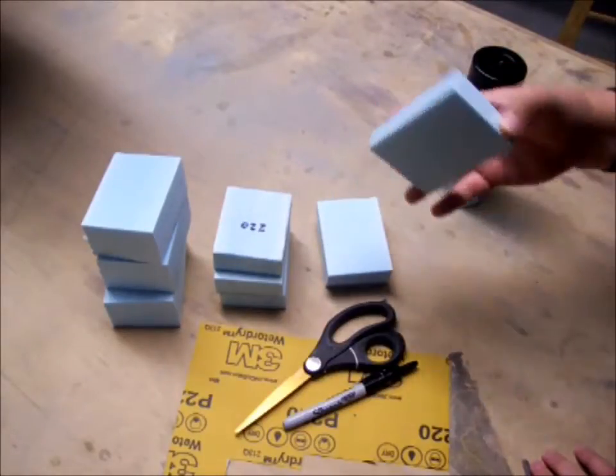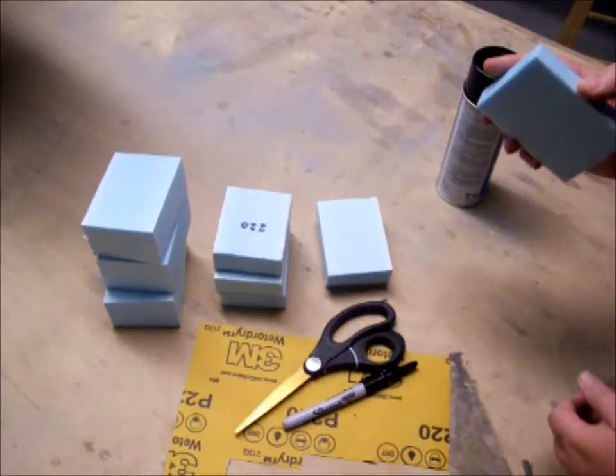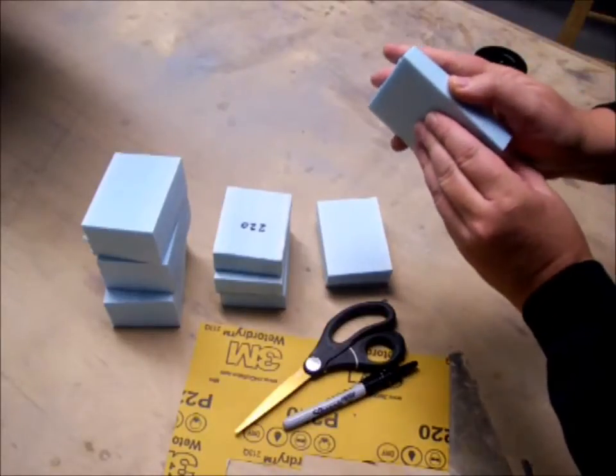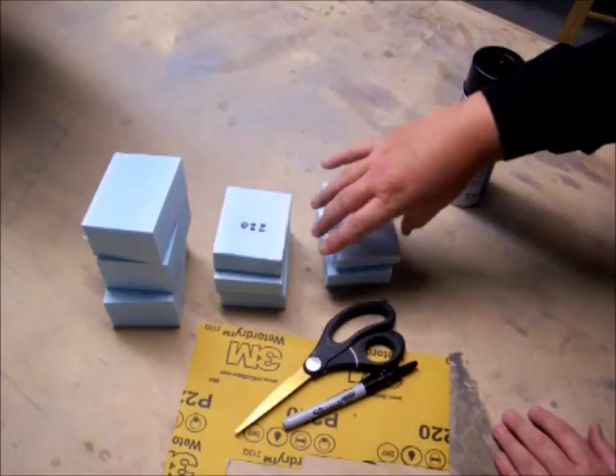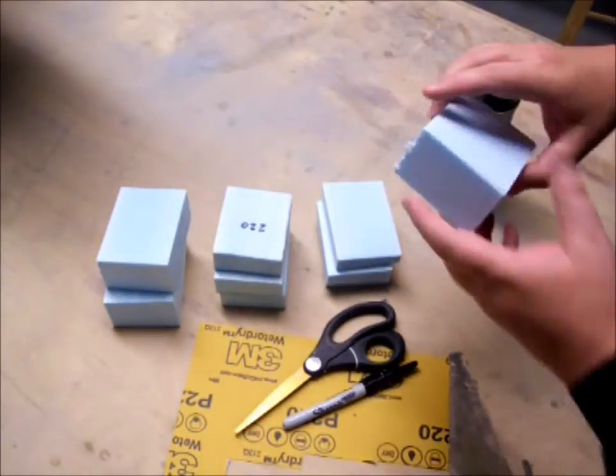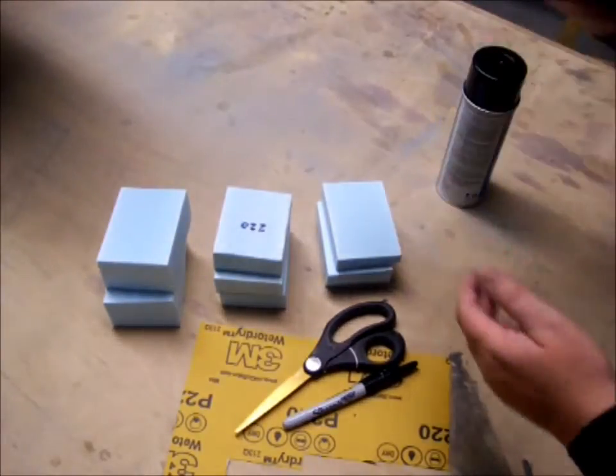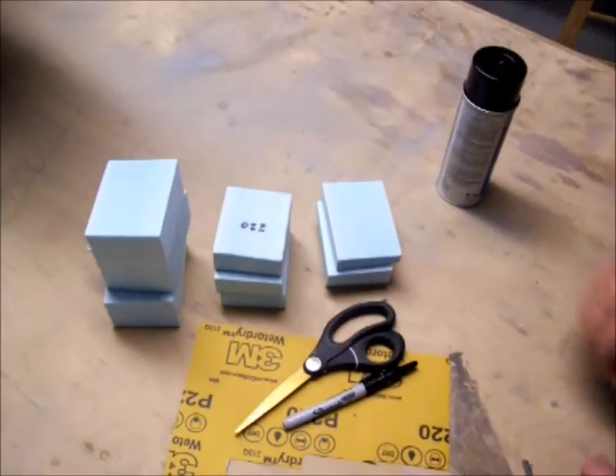The reason you have different thicknesses is that it allows you to control how much the sanding block is going to bend as you sand. So if you're doing a contoured surface like a curve, you probably want to use a thinner block that is going to allow the foam to bend just a little bit. Whereas if you're using a flat surface, you probably want to use the thickest blocks so it'll maintain that shape.